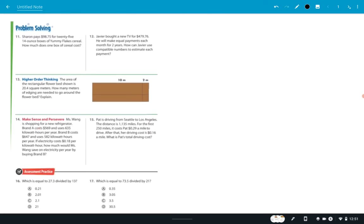Okay, so let's look at eleven. Sharon pays $98.75 for 25, 14 ounce boxes of yummy flakes cereal. What a name. How much is one box of cereal cost? What are you going to be doing? You're going to be dividing 98.75, it's going to be divided by number, or by 14. And who's going to do that one for me? Miss Noble. Miss Noble, this is worth 200 points.